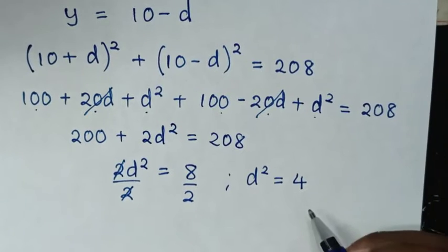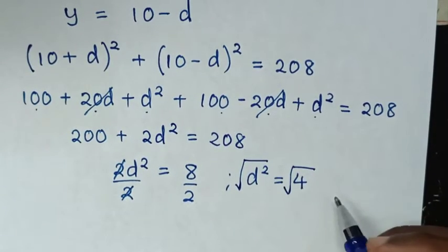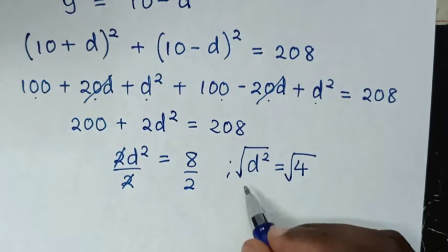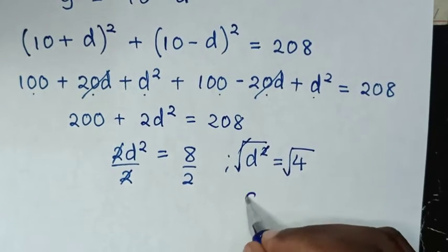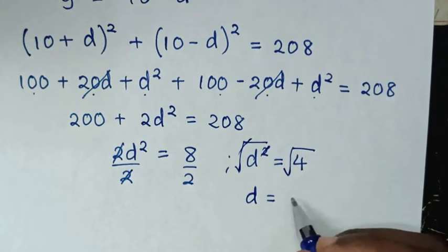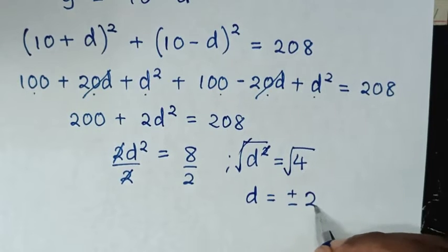Then in the next step we'll apply the square root on both sides, so the square root cancels the square, and it will be d is equal to the square root of 4, which is plus or minus 2.